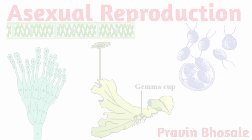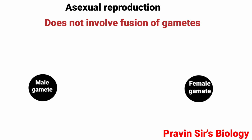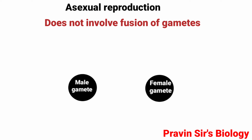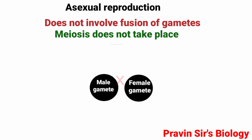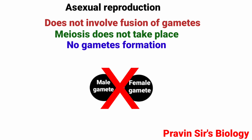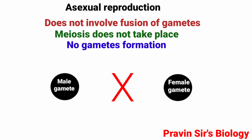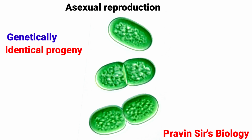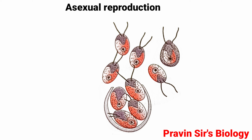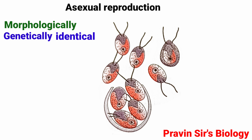Asexual reproduction does not involve fusion of two compatible gametes or sex cells. Because meiosis does not take place, there is no gamete formation and no fusion of gametes. It is a process resulting in the production of genetically identical progeny from a single organism, which inherits the genes of the parent. Such morphologically and genetically identical individuals are called clones.